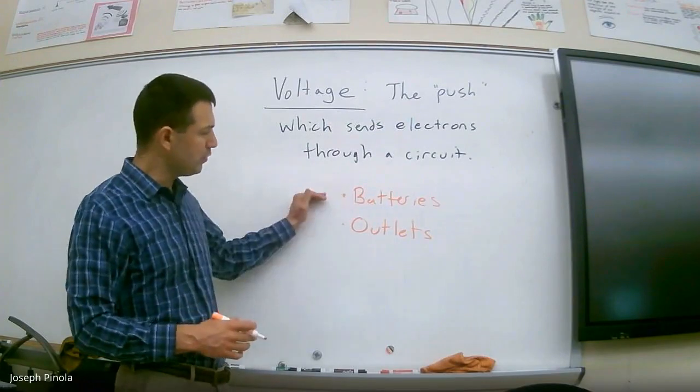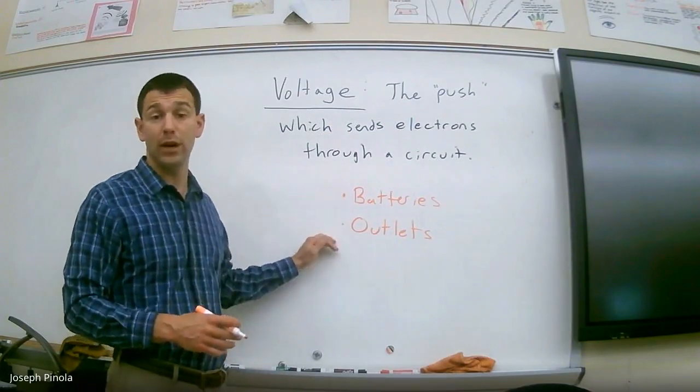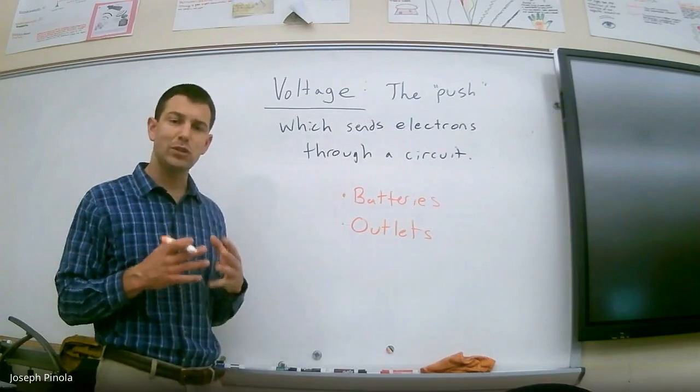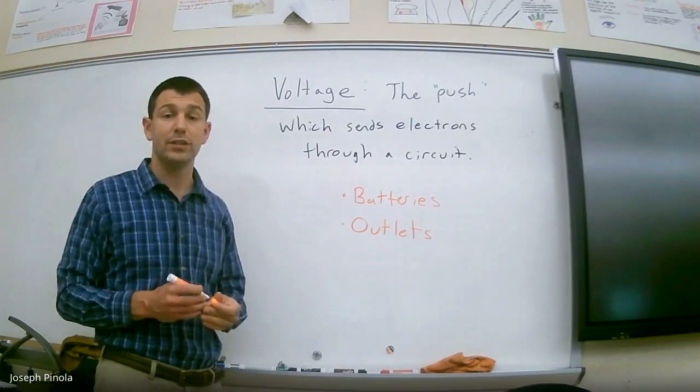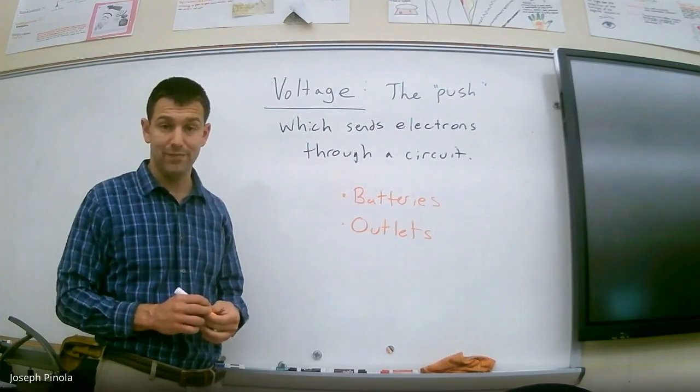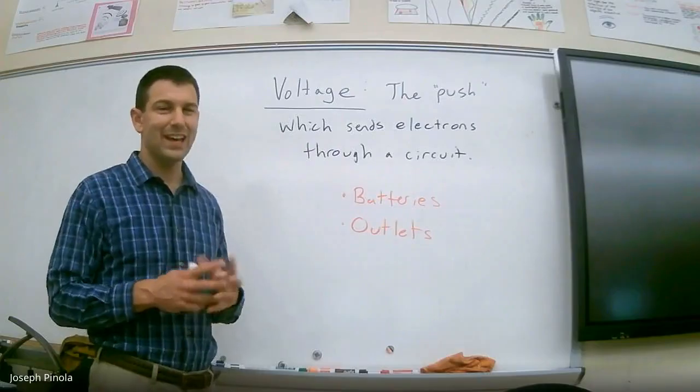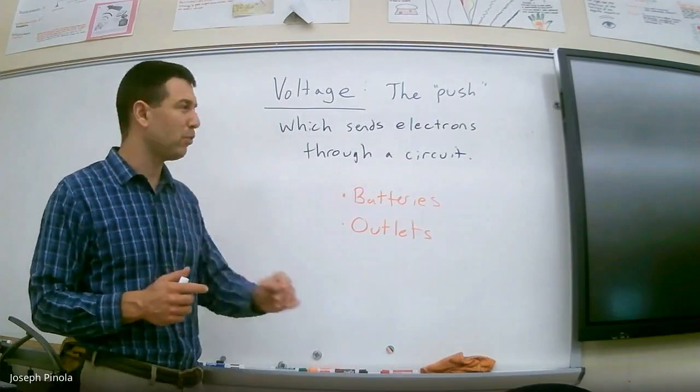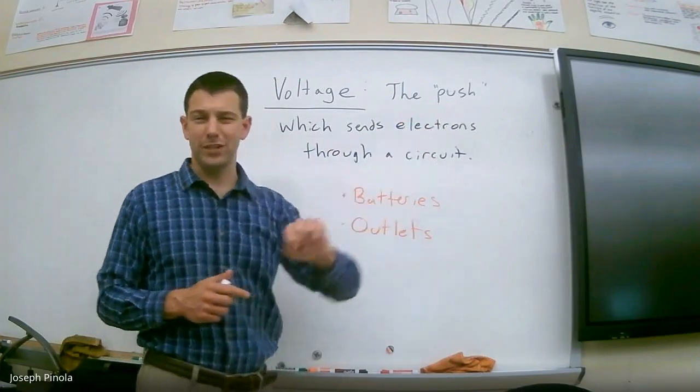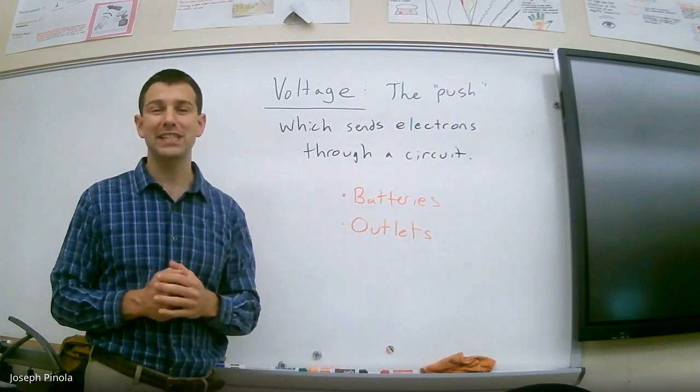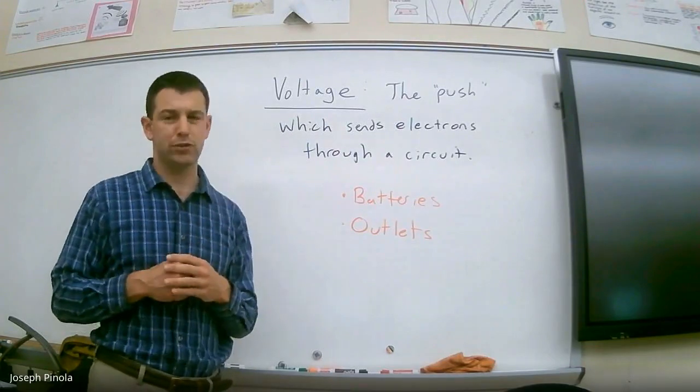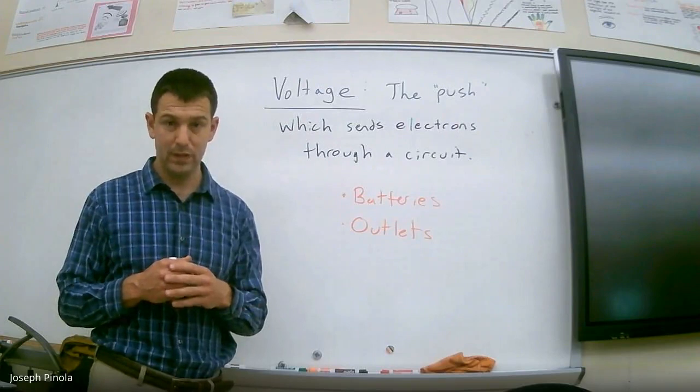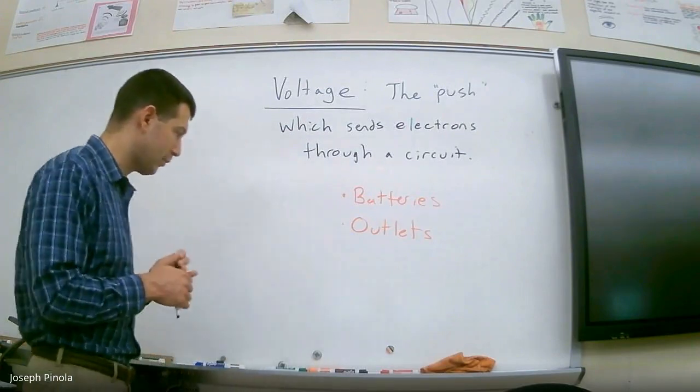So, regardless of whether you use a battery or an outlet, you need some source of voltage, something that's going to push the electrons through the circuit. However, you may have noticed that I wrote the word push in quotation marks. Many physicists would not like using this word push to describe what's truly happening with voltage. So, to do that, I want to show you another analogy.